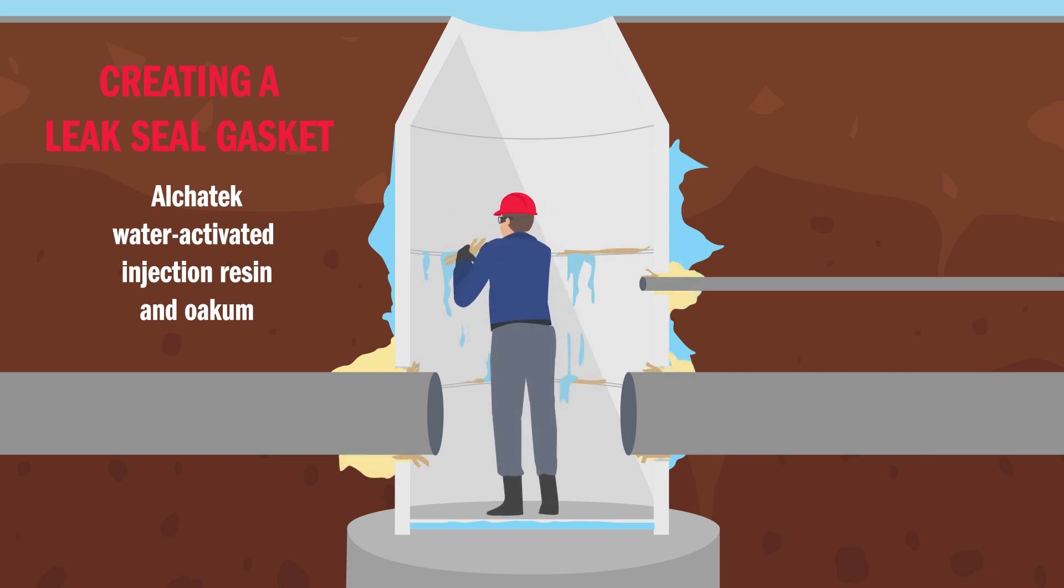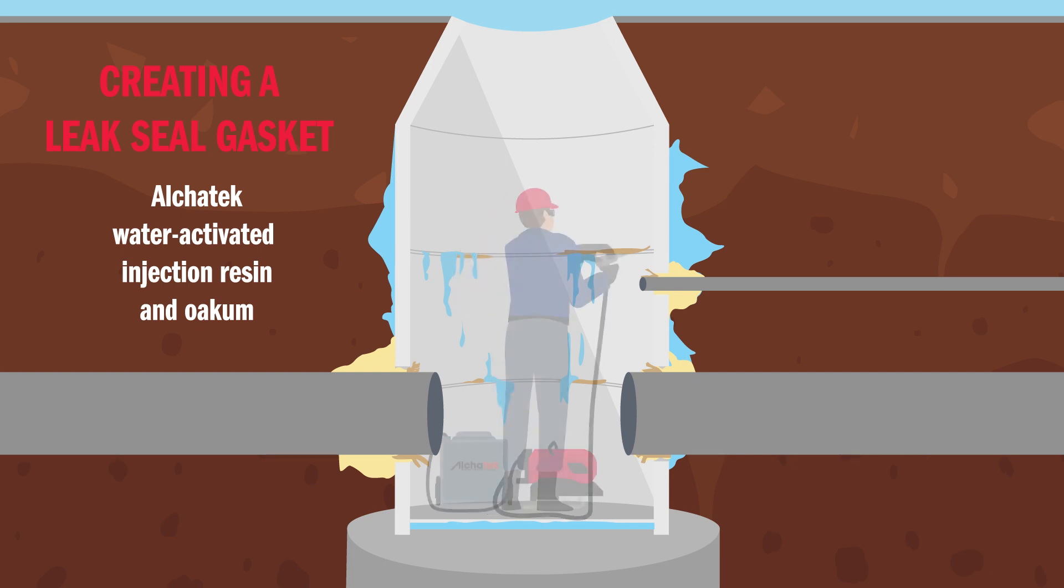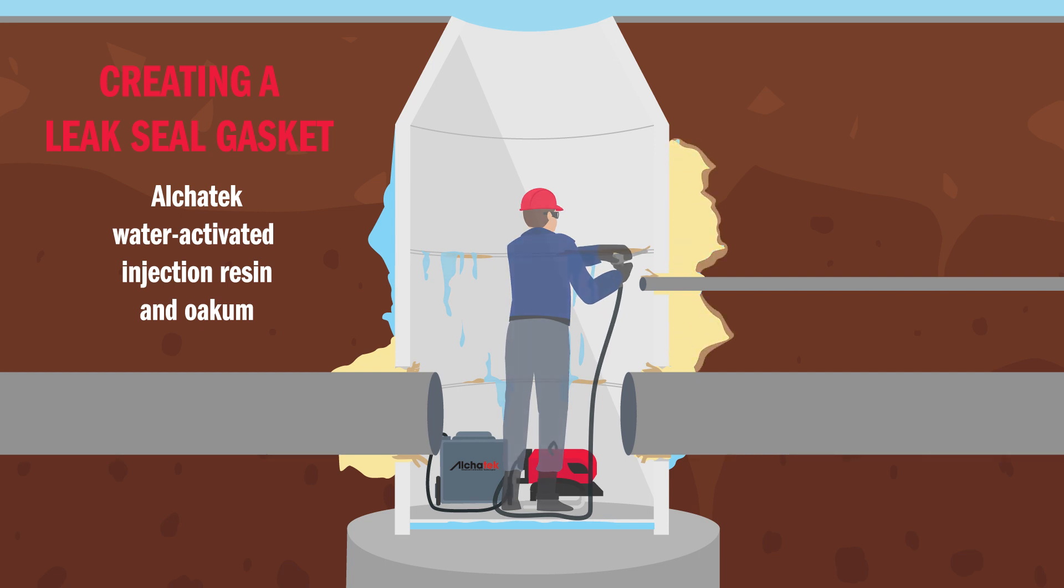Oakum is an oil-free natural fiber that is soaked in resin and packed into the wide cracks and joints with a putty knife, creating a gasket that stops the water leaks. If necessary, resin is then injected through the gasket to fill the void behind the structure.